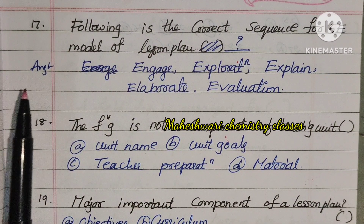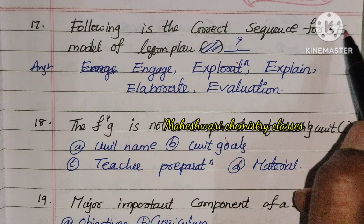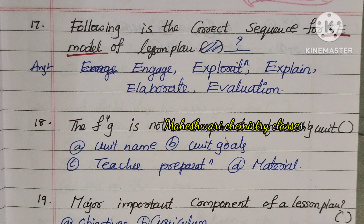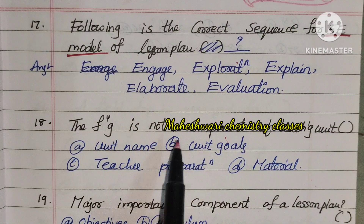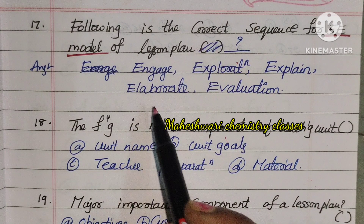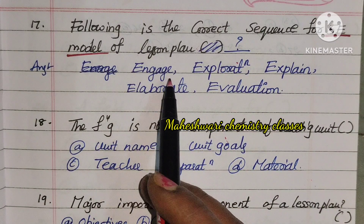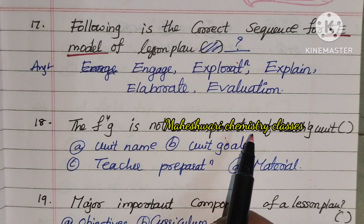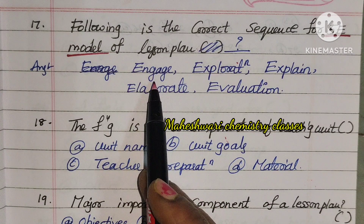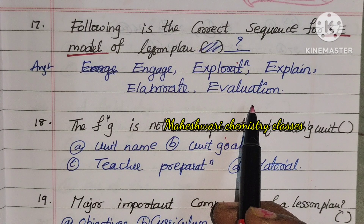Seventeenth question: What is the correct sequence for the 5E model of lesson planning? The 5E model sequence is: Engage, Exploration, Explain, Elaborate, Evaluation.